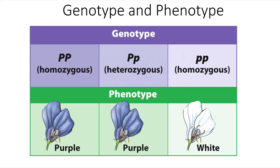Looking at how these terms can be used, here we see examples of the pea flowers from Gregor Mendel's plants. An individual can be homozygous for the capital P allele — the purple flower color allele — or heterozygous having one copy of the purple and one copy of the white flower color allele, or homozygous for the white flower color allele. Yet the phenotype will be either purple or white.